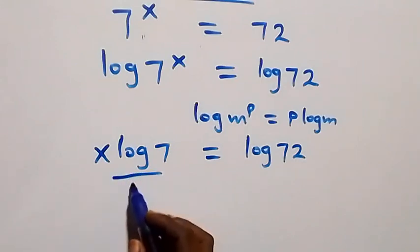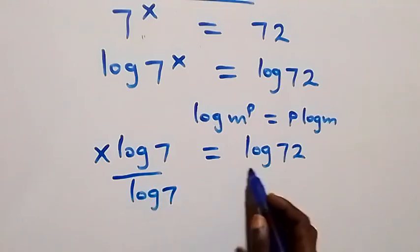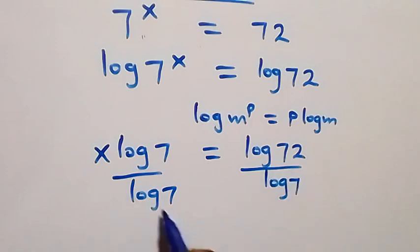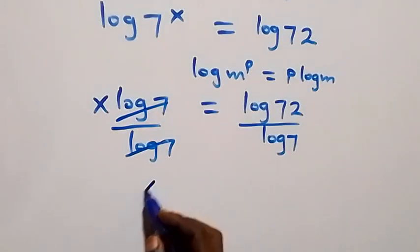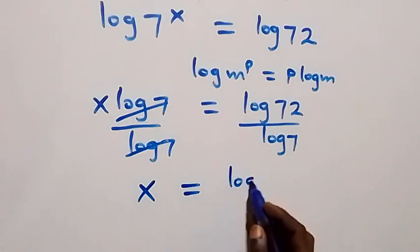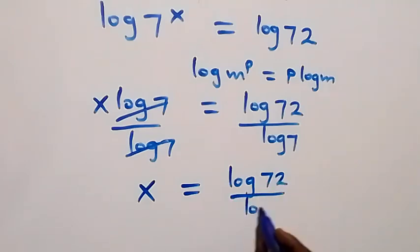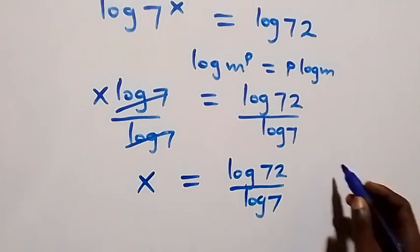From here, we isolate x by dividing both sides by log 7. The log 7 terms cancel each other, and we have x equals to log 72 over log 7.